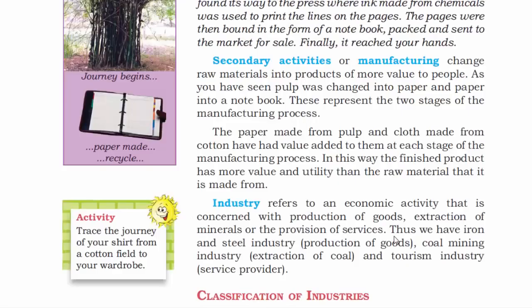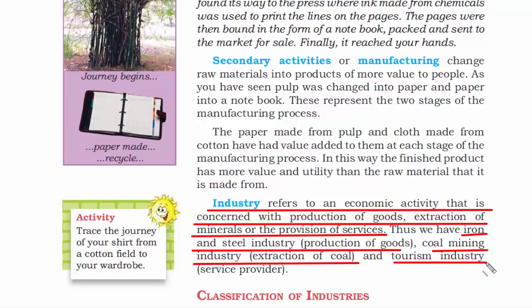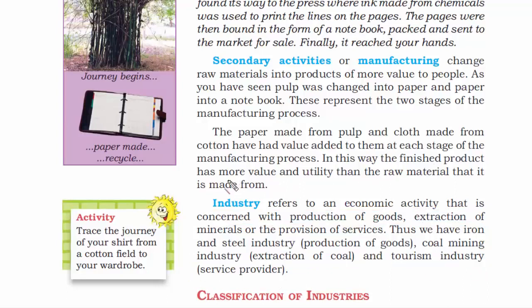So, what is an industry? The definition says: industry refers to an economic activity that is concerned with production of goods, extraction of minerals, or the provision of services. In simple terms, you go out in the world, find whatever you find — if you can extract it, produce it, refine it, and serve it to the people, that is where an industry is born. The use of an industry is that it provides value to the raw materials. Nobody is going to buy fossils; you have to make fuel out of it, make oil or petrol, and sell it in the form of energy.